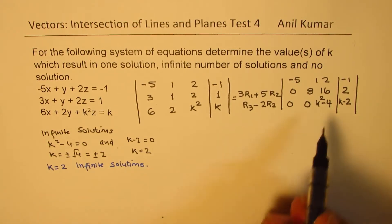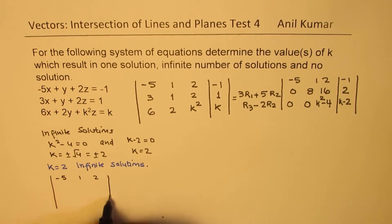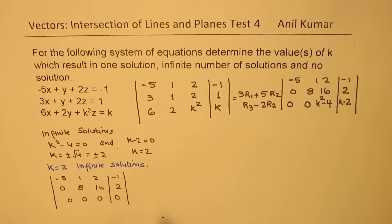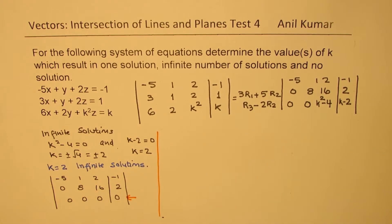If I put k equals to 2, then we'll get our augmented matrix as minus 5, 1, 2, minus 1, 0, 8, 16, 2, and we get here 0, 0, 0, 0. So this is for k equals to 2, and that gives you infinite solutions since this is one parameter, which is a line. So this results into a line.